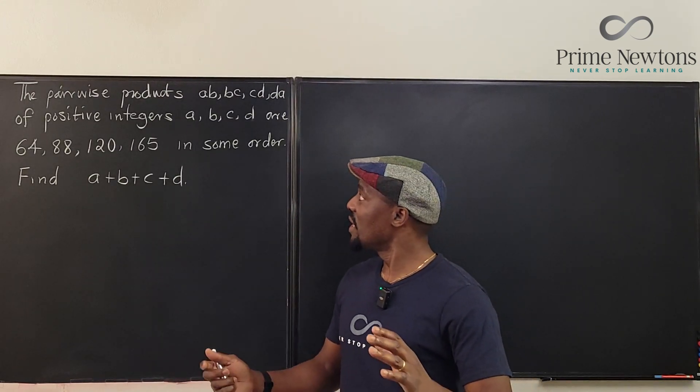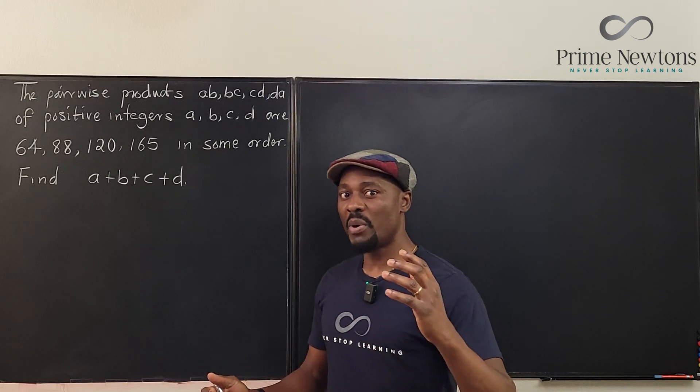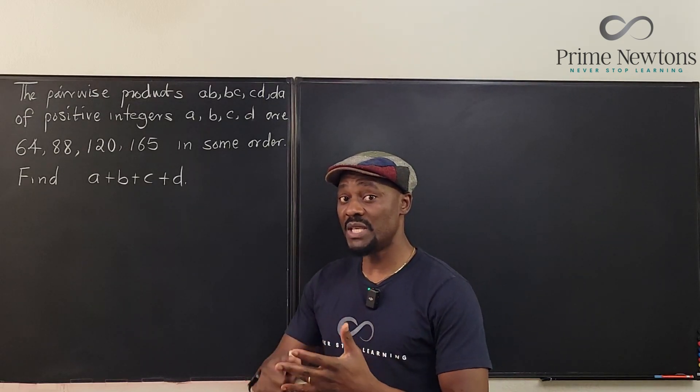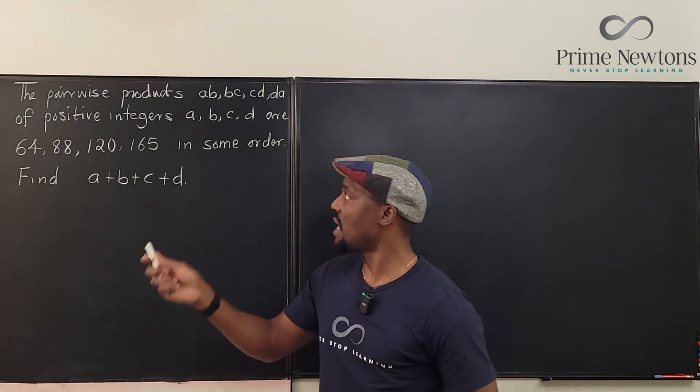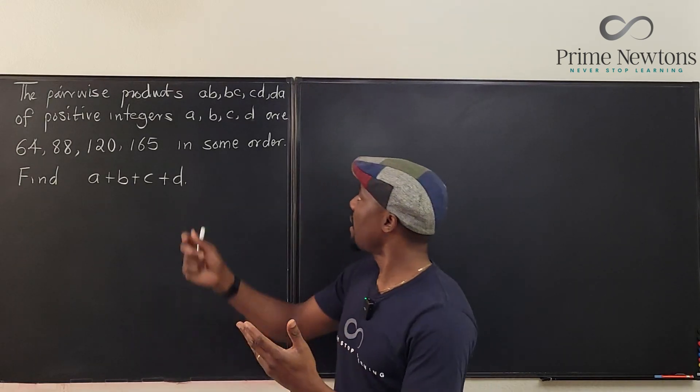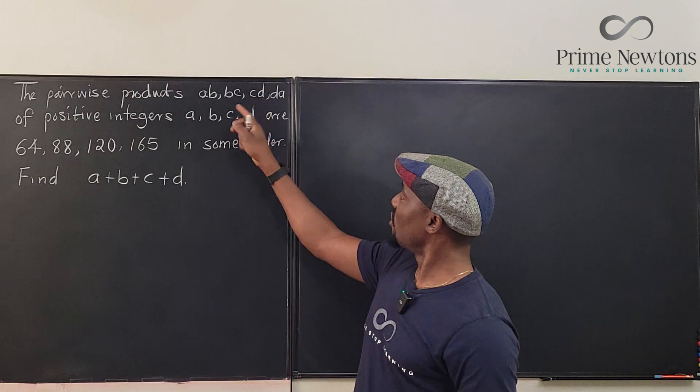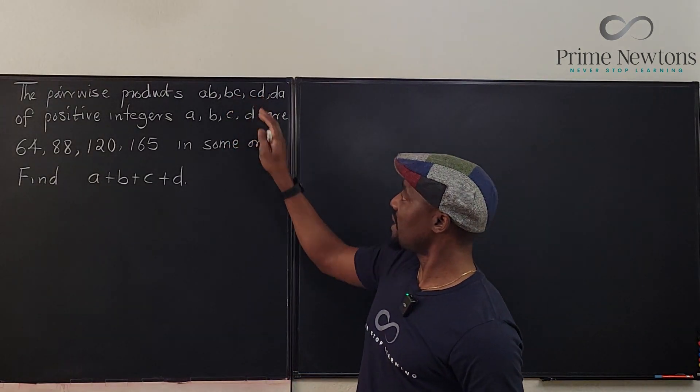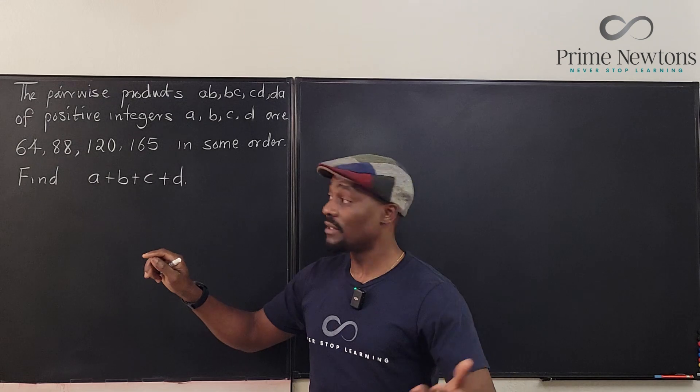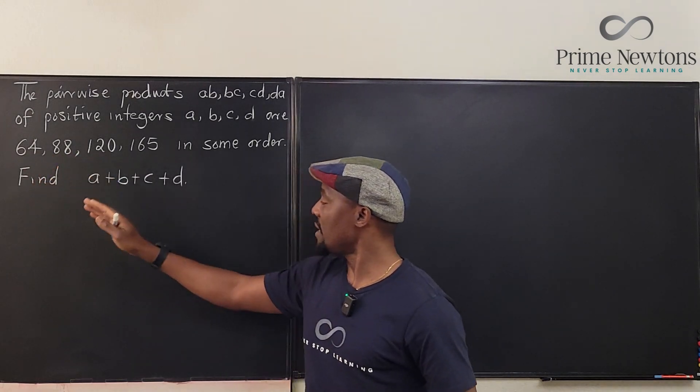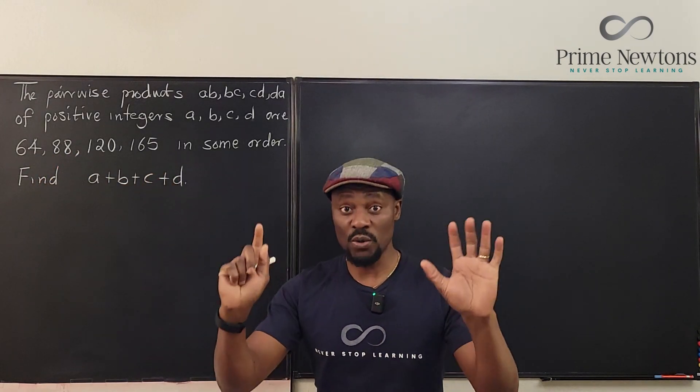The problem is we have four positive numbers A, B, C, and D, and we have the pairwise product to be AB, so you multiply A by B, A by D, multiply B by C, and C by D, and the answers you're going to get are 64, 88, 120, 165 in any order.